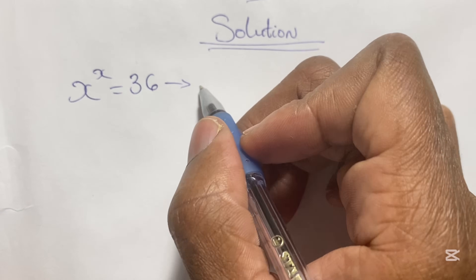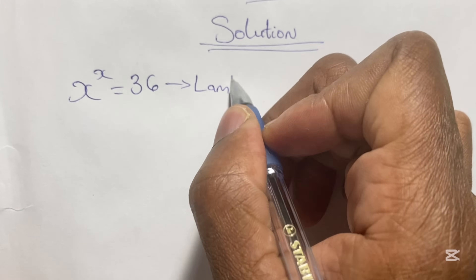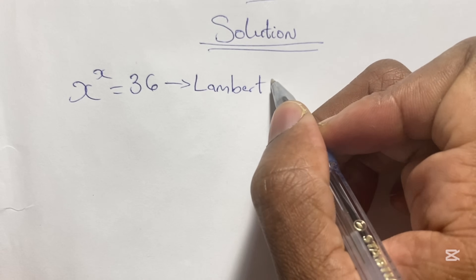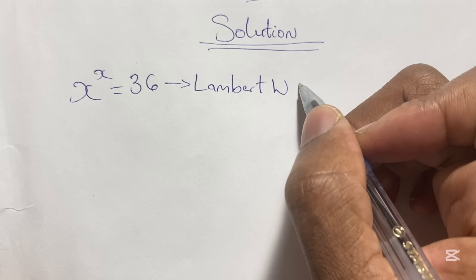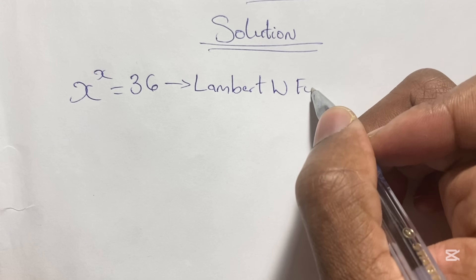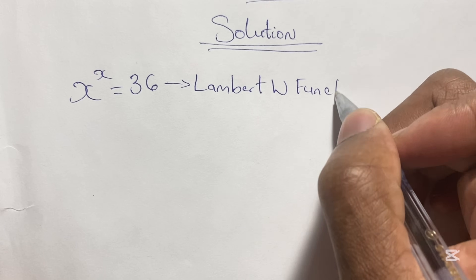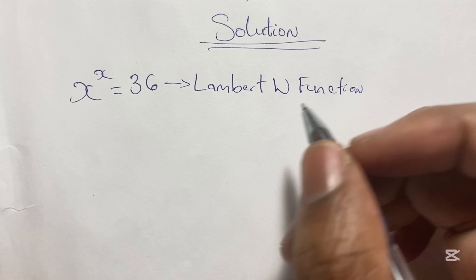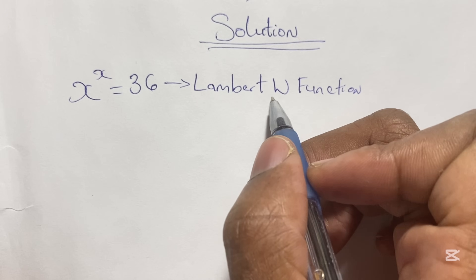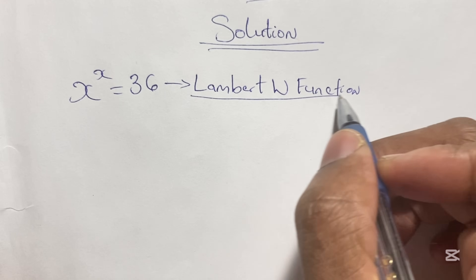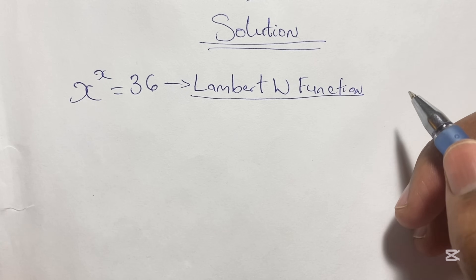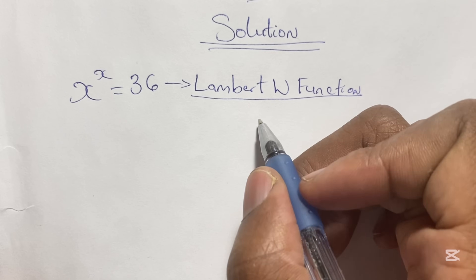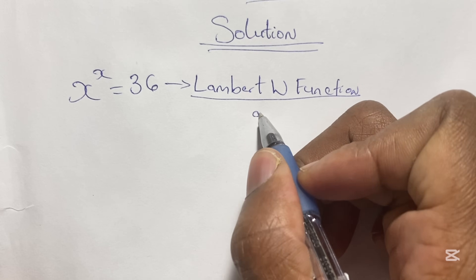Now I must confess to you that normal algebraic methods cannot be used to solve these problems. So we will be using a special kind of function called the Lambert W function. This is a special kind of function that is used to solve variables where the variable is in the base and also in the power.